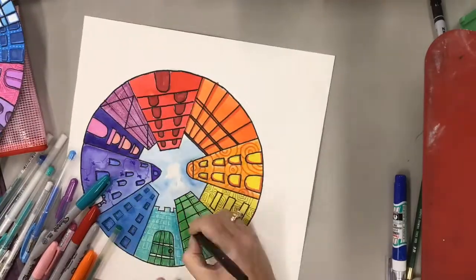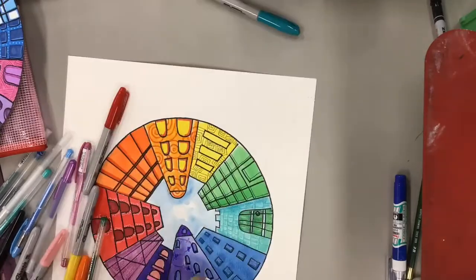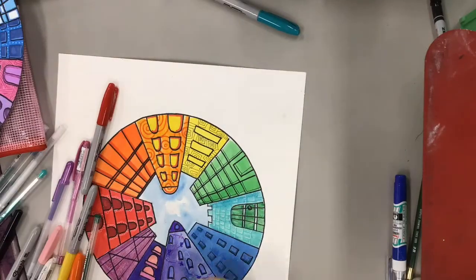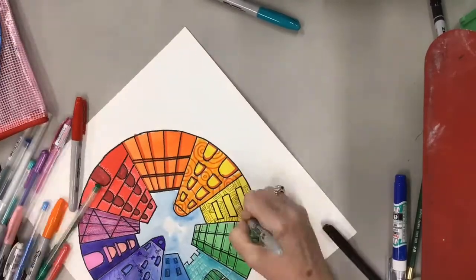Also notice that I painted my sky blue. I erased that vanishing point and I used a blue, a light blue wash to create a sky. You can also do it with a night sky. I've got an example I'll show you that in a minute.